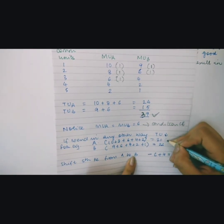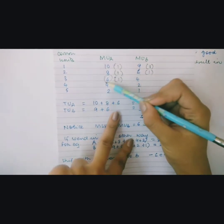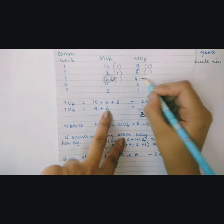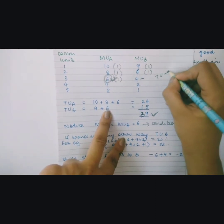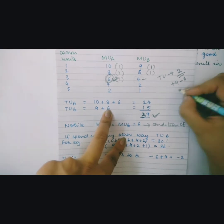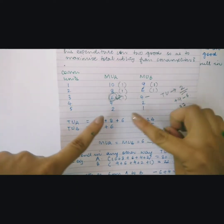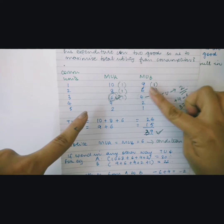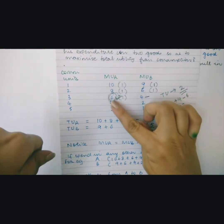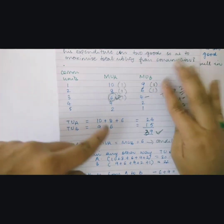If instead of spending the last rupee on commodity A you spend it on commodity B, the total utility will fall by 2 units — you gain 4 but lose 6 — giving a total utility of only 37. Therefore, you must always allocate money to whichever commodity gives the maximum marginal utility, and ensure that the marginal utility of commodity A equals the marginal utility of commodity B.